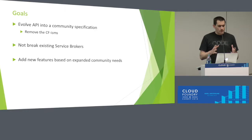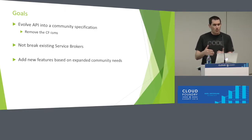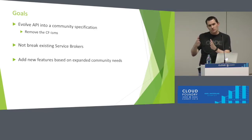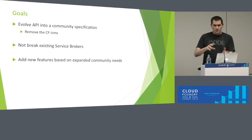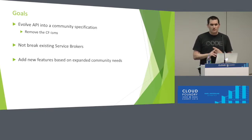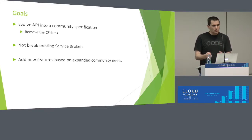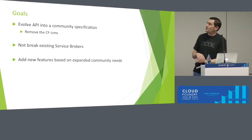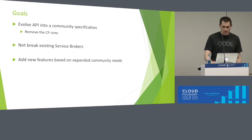The goals here are to evolve it into a community spec, which means more than just Cloud Foundry. That means removing the CFisms — anything specific to Cloud Foundry we try to extract from the core spec. The other key goal is we did not want to break existing service brokers, because we want the entire ecosystem of brokers to be usable with other platforms like Kubernetes. If you end up breaking them in the process, that defeats the purpose. Once you get all that in place, then we can start looking at new features.